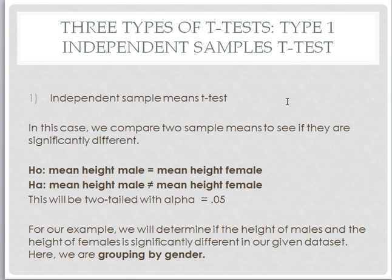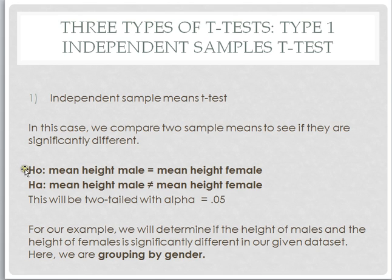Our first type of t-test is called an independent sample means t-test. In this particular case, we're going to compare two sample means to see if they are significantly different. In our example, we're going to look at the mean height of the male people in our sample, and see if that is significantly different than the mean height of the female people in our sample. Our null hypothesis is that our mean heights are not significantly different, and our alternative hypothesis is that our mean heights between males and females are significantly different.